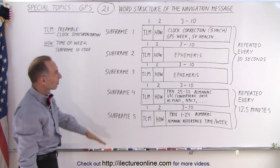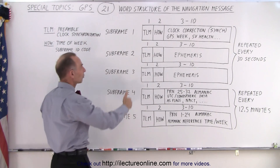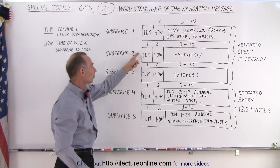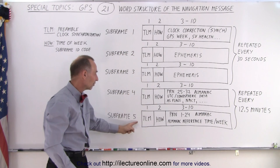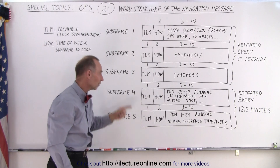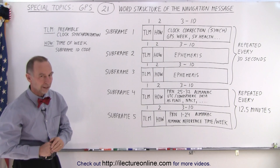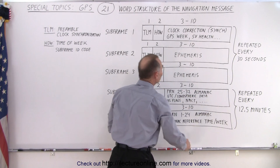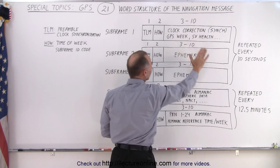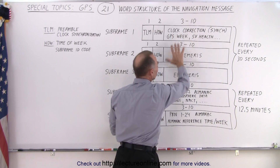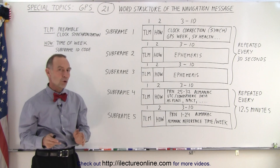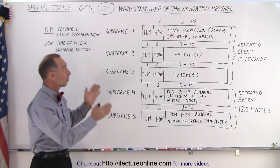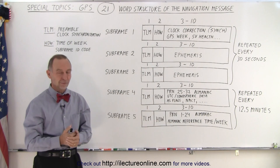Notice that it takes 30 seconds to go through one set of sub-frames — each sub-frame takes six seconds. So every six seconds it jumps to the next sub-frame, does that for 30 seconds, then repeats through all five sub-frames. This TLM and HOW data does not change; sub-frames four and five don't change for about 24 hours; and the ephemeris data in sub-frames one through three changes every hour or two because we want the latest and most accurate update. And that is what we mean by the word structure of the navigation message.